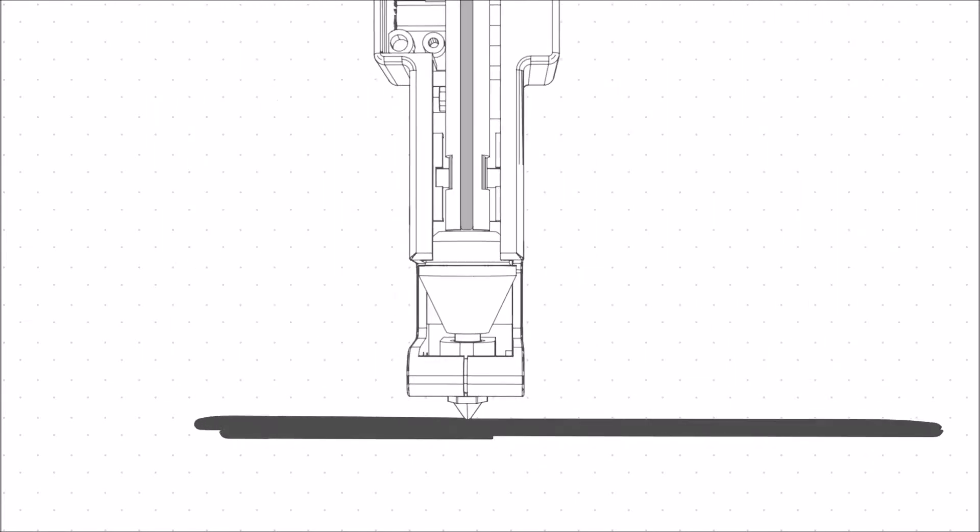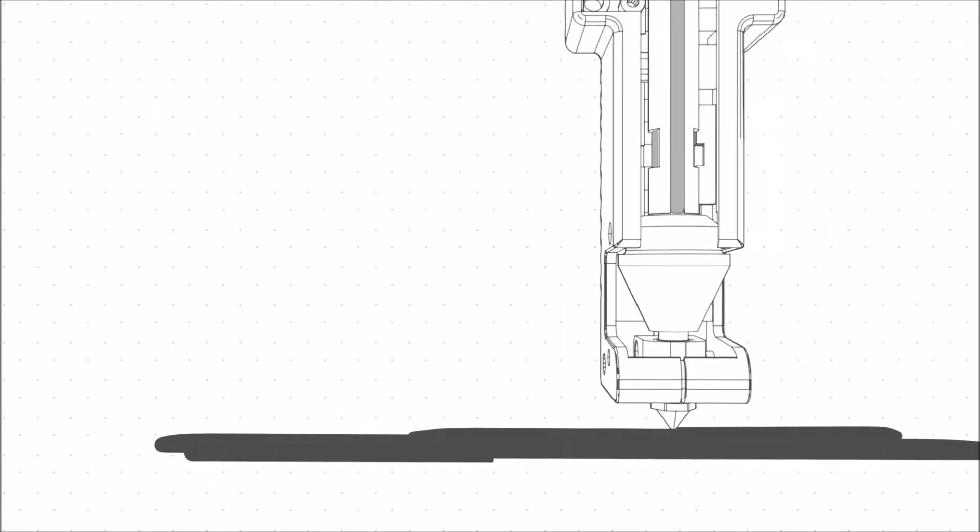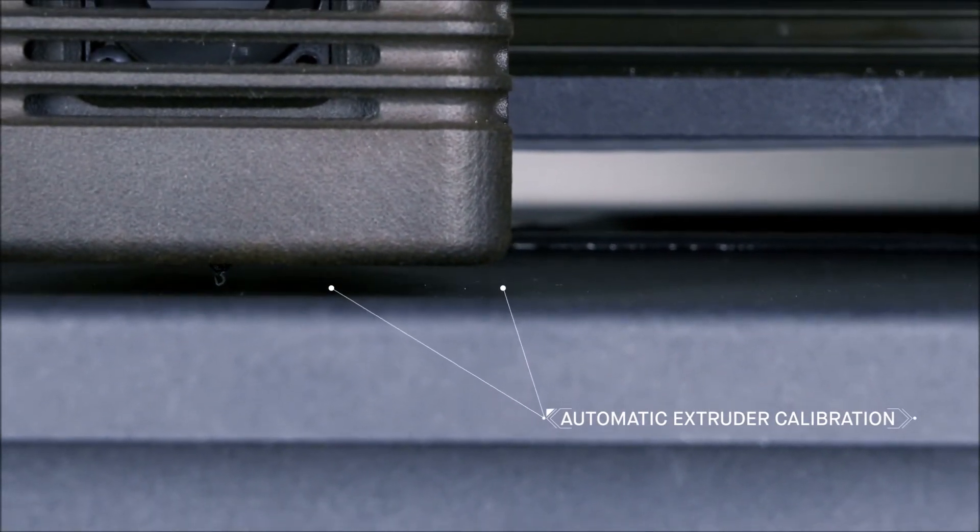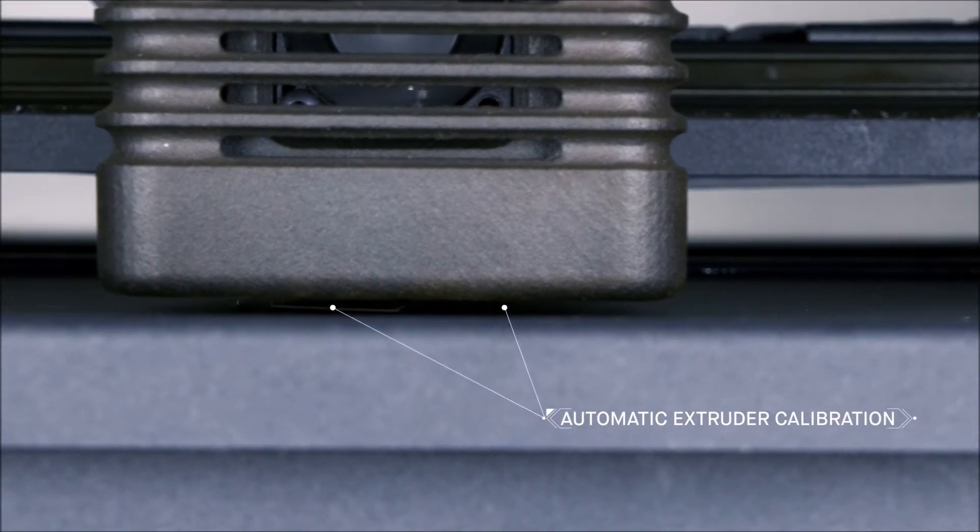Shaping the part layer by layer, similar to an FDM printer, the printer features automatic extruder calibration and bed leveling based on a software analysis of the parts to be printed.